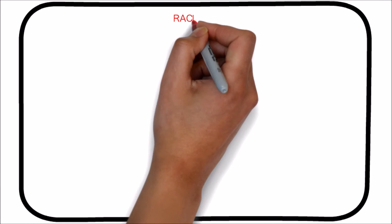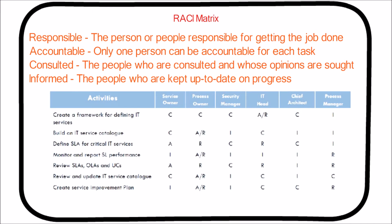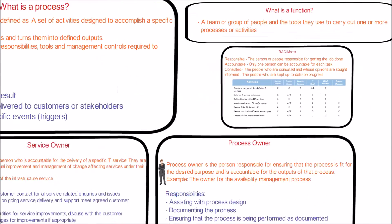Now we will see about the RACI matrix, which connects the process and functions along with the roles. RACI is an acronym for the following four main roles: Responsible — the person or people responsible for getting the job done; Accountable — only one person can be accountable for each task; Consulted — the people who are consulted and whose opinions are sought; and Informed — the people who are kept up to date on progress.